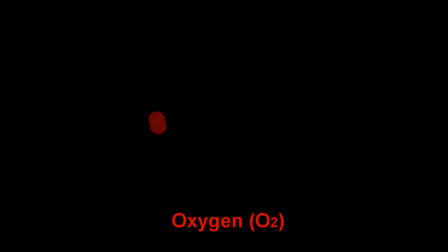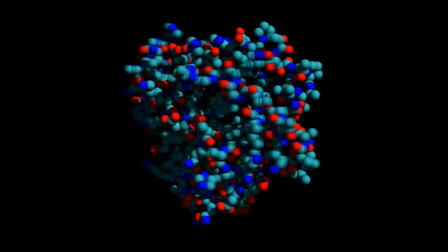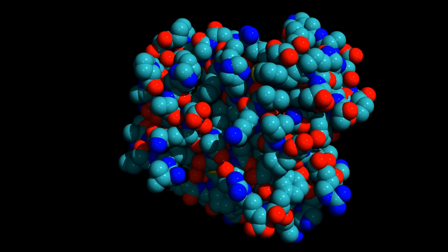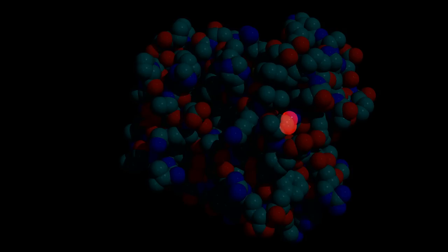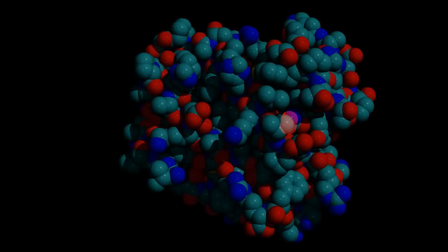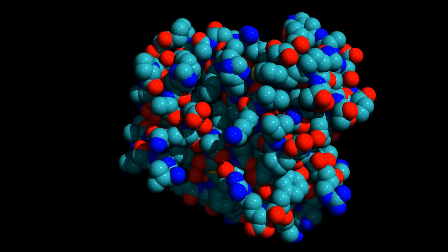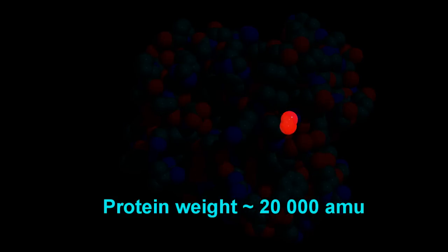Now the thing that first strikes you about hemoglobin of course is just how inefficient it looks. I mean you've got a protein here with a molecular weight of about 20,000 that's transporting an oxygen with a molecular weight of about 32. I mean damn, even a precursory inspection with a Mark I eyeball, you can see that there's an awful lot of protein and not much oxygen.